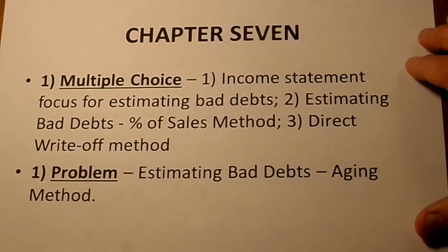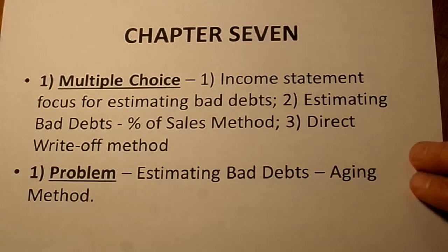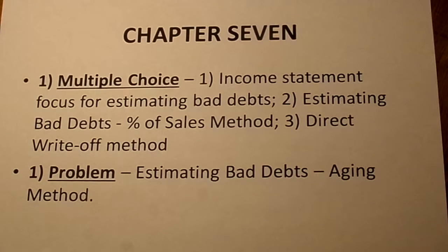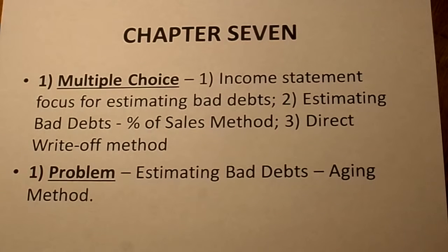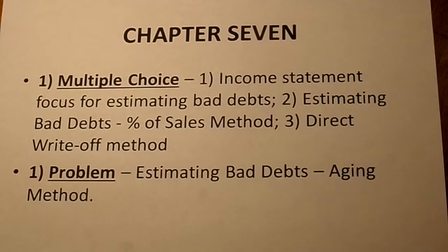Diving into what types of material are actually on the test. You have to know which of the methods of estimating bad debts — which of the allowance methods — have an income statement focus. One has an income statement focus, two have balance sheet focuses, and there's one method that's not an allowance method. You'd also have to know how to estimate bad debts using the percentage of sales method and how to use the direct write-off method.